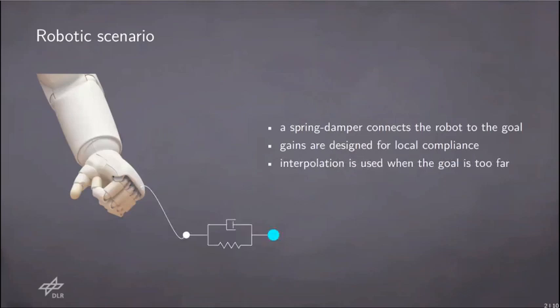Since the value of the stiffness and the damper are typically given by the desired compliance that we want to realize, what I typically do when the goal is too far is to drag the robot closer to the goal and then activate the desired compliant behavior.